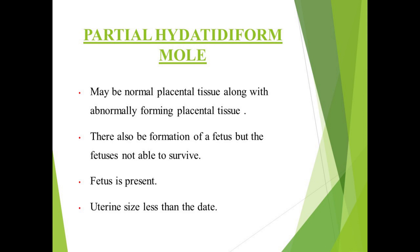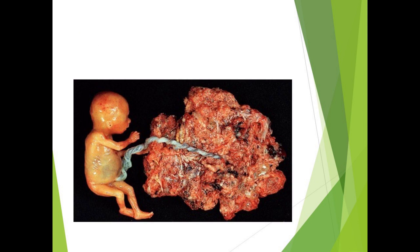Coming to the partial or incomplete hydatidiform mole, there can be normal placental tissue along with some parts of abnormal placental tissue. There is formation of fetal tissues, but the fetus is not viable. Fetal tissues are present, and the uterine size is less than the due date. The picture depicts the partial mole where the fetus is also formed along with some degenerative portion of the chorionic villi of the placenta.